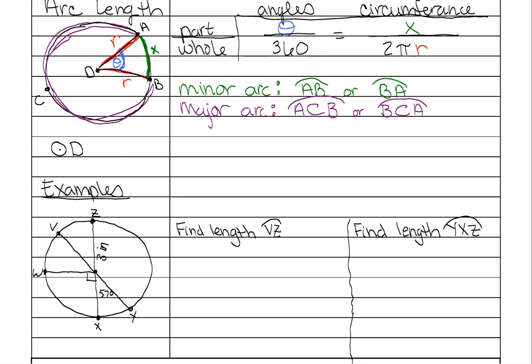There are lots of ways that you could figure out all the different angles in here. But for our purposes we're going to look at what we're trying to find. We're trying to find VZ. VZ is right here. And we need to know our angle measure of this one.